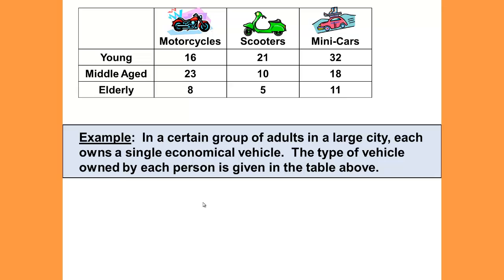We will have a certain group of adults in a large city. Each owns a single economical vehicle, and the type of vehicle owned by each person is given in the table above. So we have motorcycles, scooters, and mini-cars.